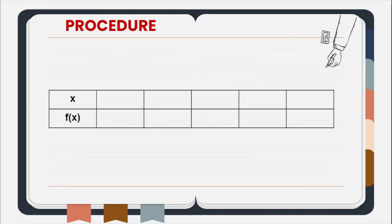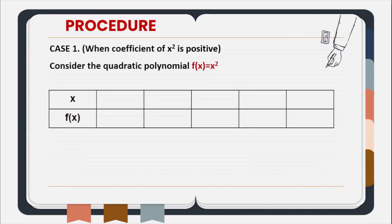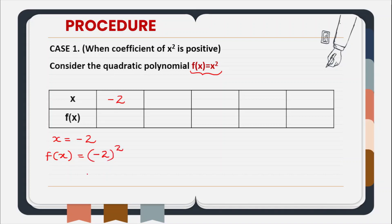So let us start with the procedure. For case one, that is when the coefficient of x square is positive, let us consider a quadratic polynomial f(x) = x². So let us find the solution table for this quadratic polynomial. When the value of x is minus 2, the value of f(x) will be minus 2 squared, that is 4.